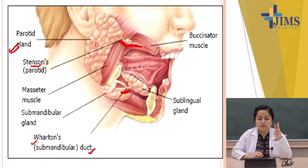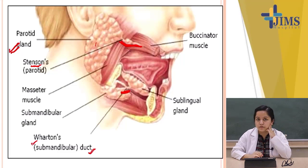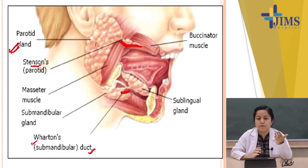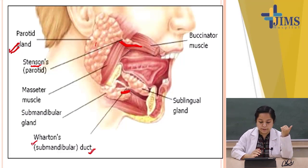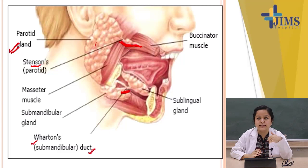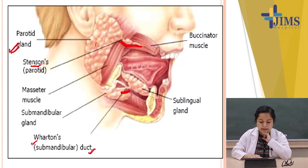To summarize the major salivary glands: the parotid, near the ear, has Stensen's duct; below the mandible is the submandibular gland with Wharton's duct; and the sublingual gland is the third.